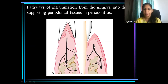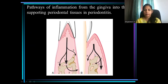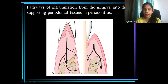Gingival inflammation can extend either directly into the alveolar bone. Usually this gingival inflammation travels along the collagen fibers and along the course of blood vessels. It extends into the underlying alveolar bone either through the outer periosteum — through the vessels present within the outer periosteum — entering the marrow spaces of alveolar bone.